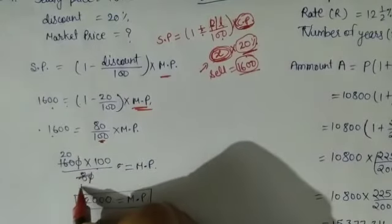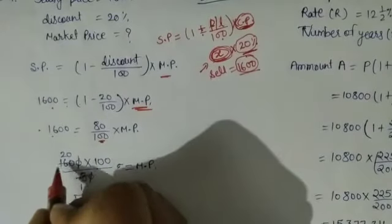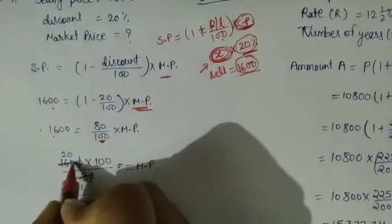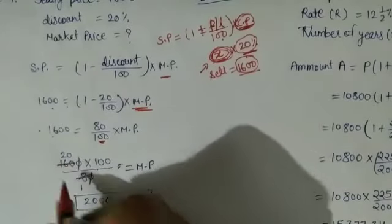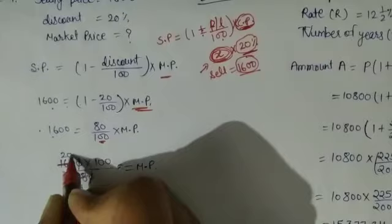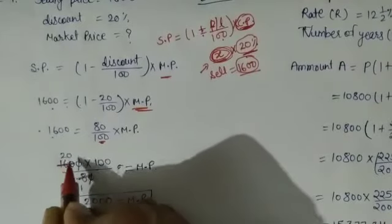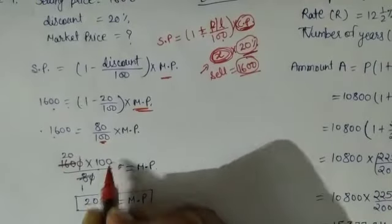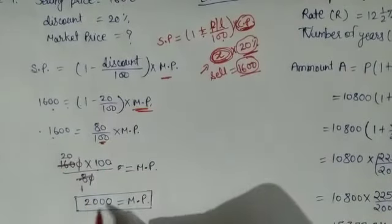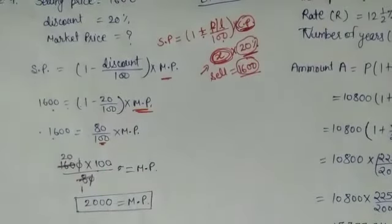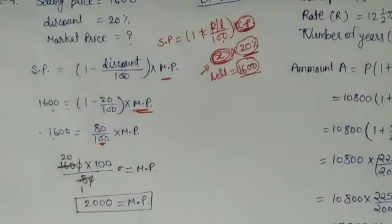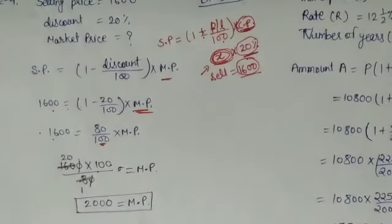8 into 2 — 1,600 divided by 80 — we multiply 20 and 100, we get 2,000. That is the market price of that value.